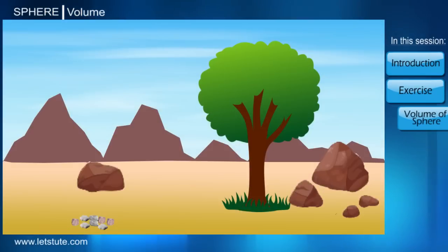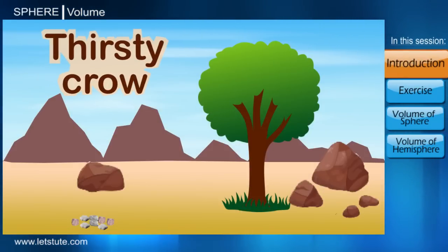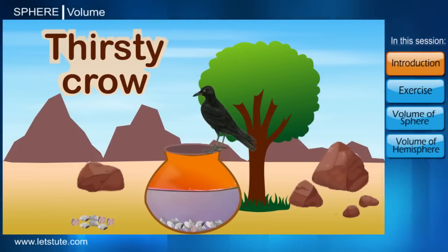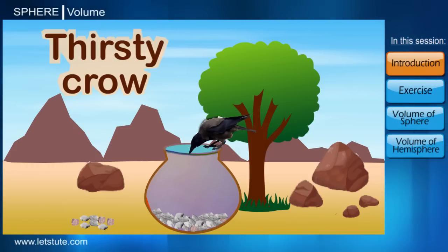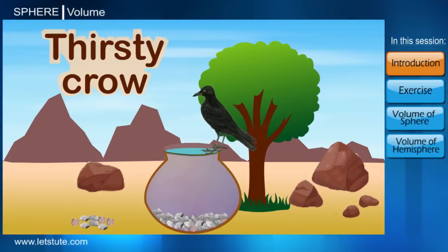Friends, we all have heard the story of the thirsty crow where a thirsty crow comes across a pot that contains only a small quantity of water. So it dropped stones into the pot to raise the water level so that it could drink water. The moral of the story was where there is a will, there is a way.